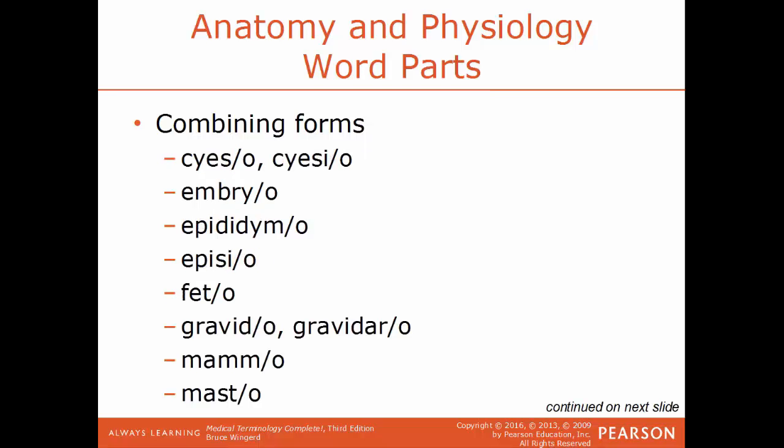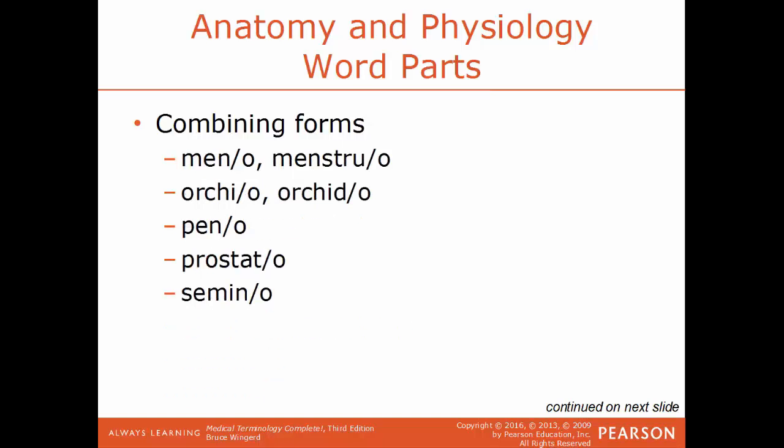Cervico is a reference to the cervix or the neck. Corio is a reference to the chorion, which is the outermost membrane of a fetus. Siezo or siezio is a reference to being pregnant. Embryo is a reference to an embryo. Epididymo is a reference to the epididymis. Episio is a reference to the vulva. Fido is a reference to a fetus. Gravido or gravidar is a reference to a pregnancy. Mammo is a reference to the breast, and masto is also a reference to the breast.